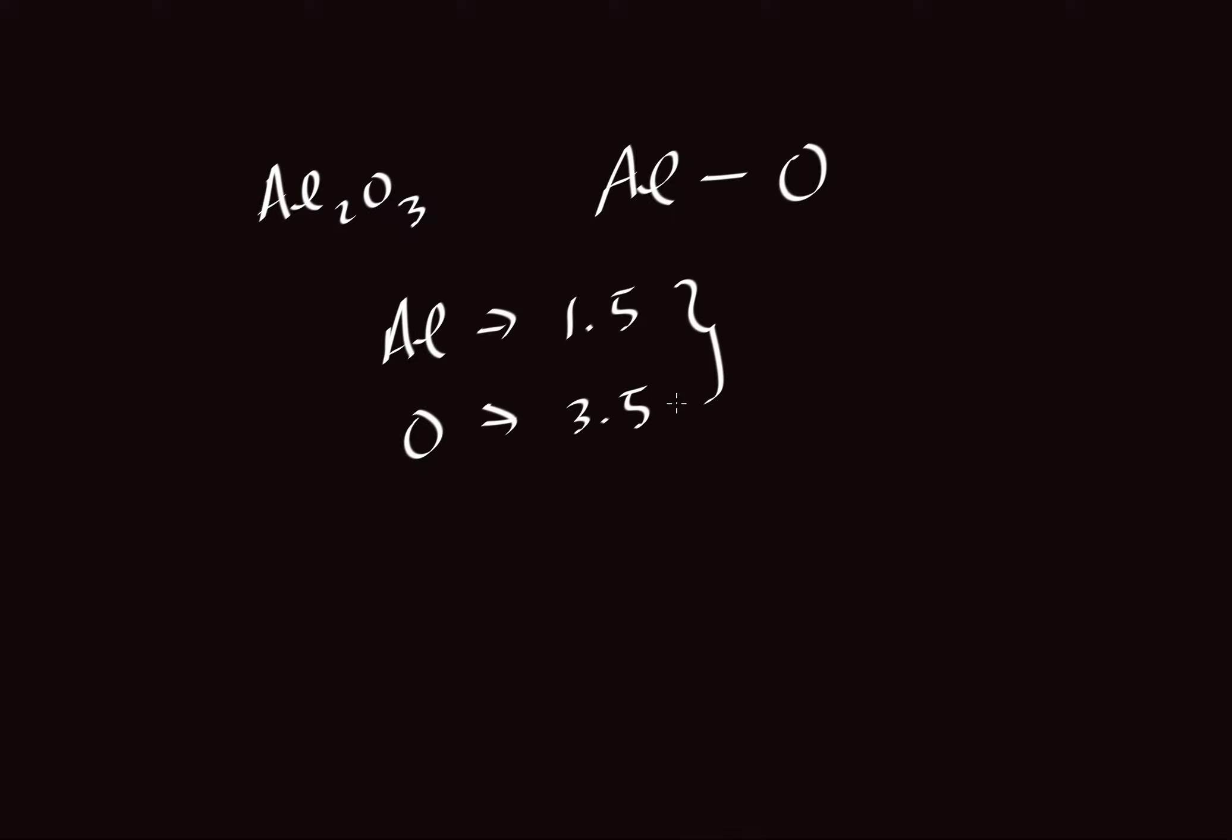Aluminum has an electronegativity of 1.5. Oxygen has an electronegativity of 3.5. Let's call this one a and this one b. So x_a minus x_b would be equal to 2.